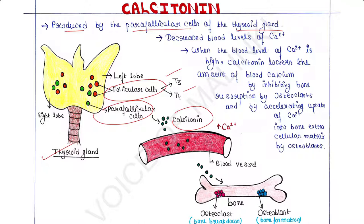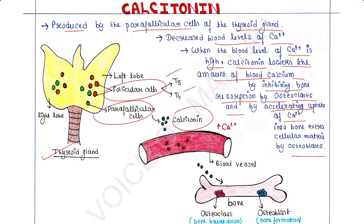The function of calcitonin hormone is to decrease blood levels of calcium. When the blood level of calcium is high, calcitonin lowers the amount of blood calcium by inhibiting bone resorption by osteoclasts and by accelerating uptake of calcium into bone extracellular matrix by osteoblasts.